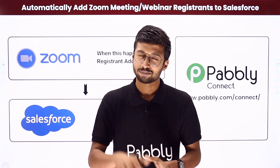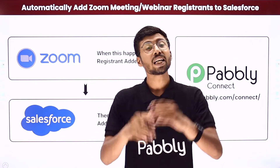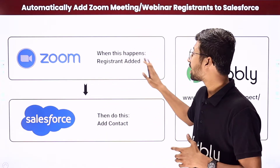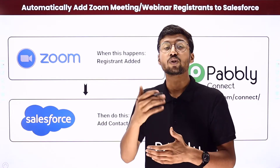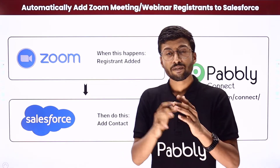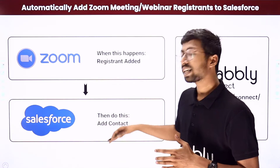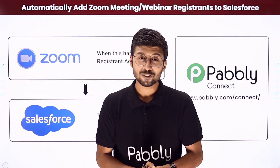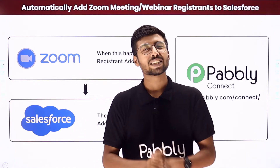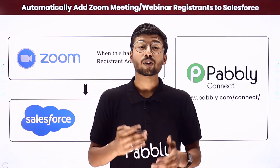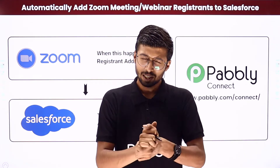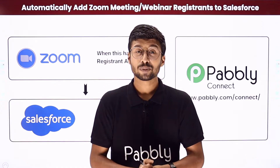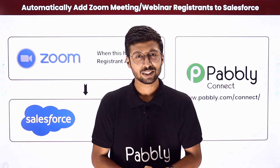This manual process is very repetitive and time-consuming on a daily basis. In this video, I've come up with an awesome automation for you: whenever a new user gets added as a registrant for your Zoom meeting or webinar, automatically that same person will also be added as a contact in your Salesforce CRM. To make this happen, we will be using Pabbly Connect, which is an automation and integration software.